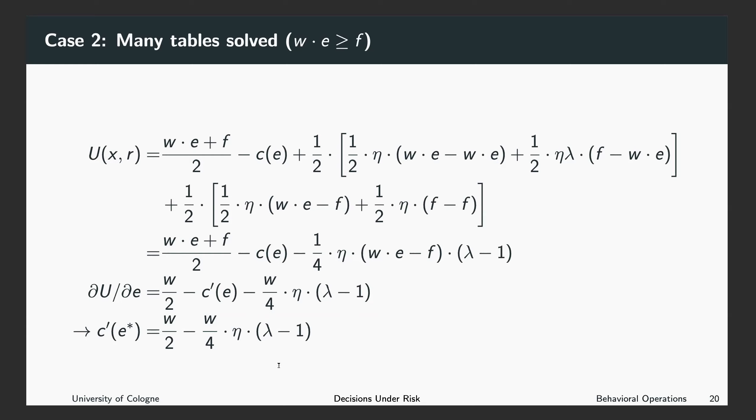Keep in mind that we are looking at the case where we have already solved so many tables that when getting the piece rate, we are better off than when getting the fixed payment. And what you can see here, if we look at the influence of the gain-loss utility, the loss aversion, is that the more loss averse I am, the lower is the effort I want to exert.